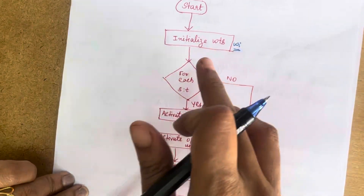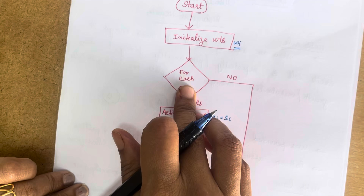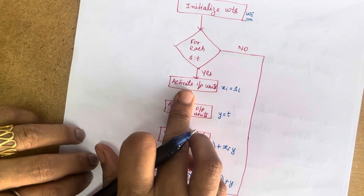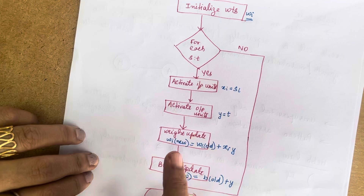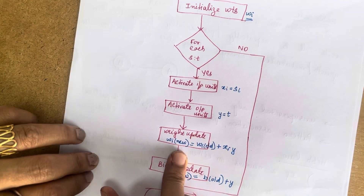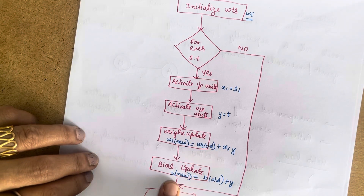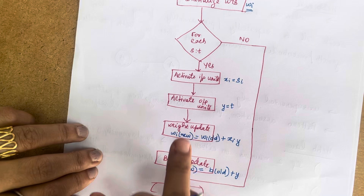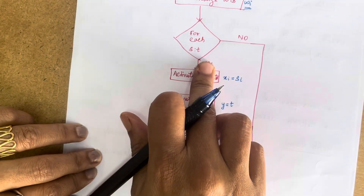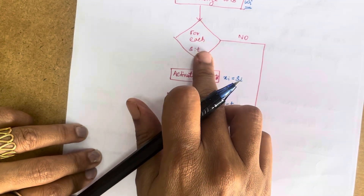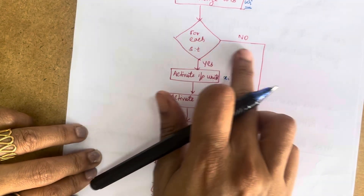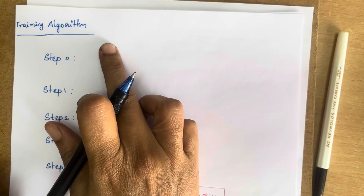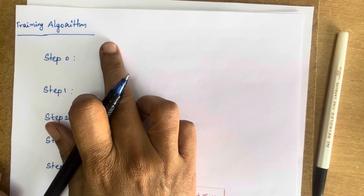You initialize all the weights in the network, then take one set of input-output pairs. For each pair you activate the input unit, then the output unit, then update the weights and bias. You proceed until there are no more input-output pairs, then stop. Now we will see the training algorithm for the Hebb network.